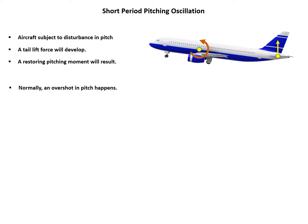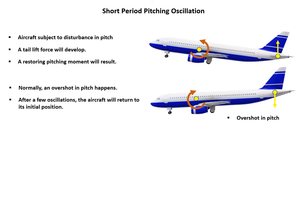And normally there's an overshoot in pitch happens. So what happens is like this. So there's an overshoot, and the aircraft's nose is pointing downwards. And in this case, there's a negative angle of attack developing on the tail plane. So there is a downward lift.